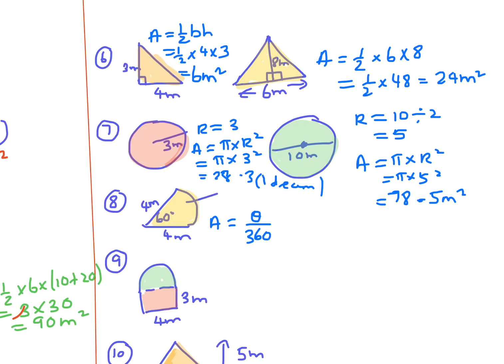For the next one, which is a sector, we put the angle over 360 times pi times the radius squared. The angle is 60, so it's 60 over 360 times pi times 4 squared, and you end up with 8.4 meters squared to one decimal place.